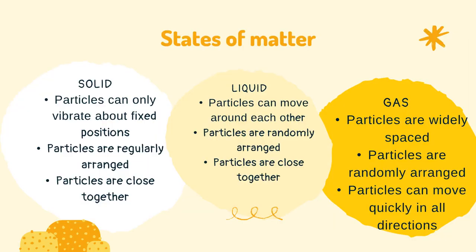In a solid, the particles can only vibrate about fixed positions. The particles are regularly arranged and the particles are close together. In a liquid, the particles can move around each other.